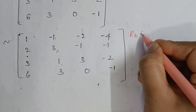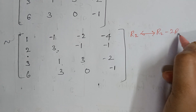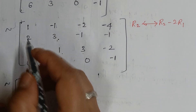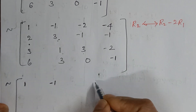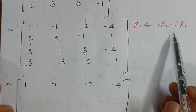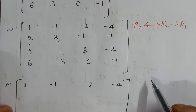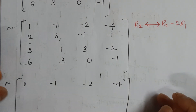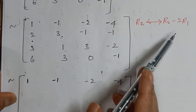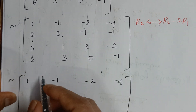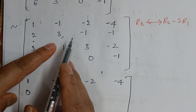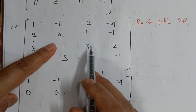The first operation I will perform is R2 → R2 - 2·R1. Row 1 and row 4 remain untouched for now. For row 2, performing R2 - 2·R1 gives: 0, 3+2=5, -1+4=3, -1+8=7.